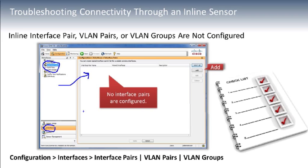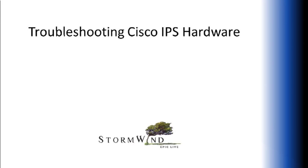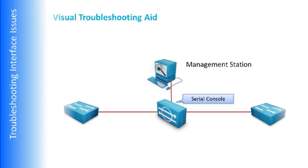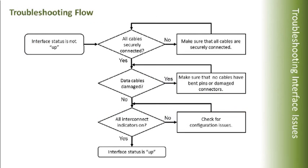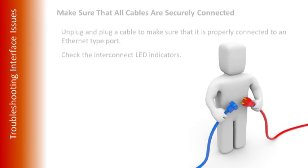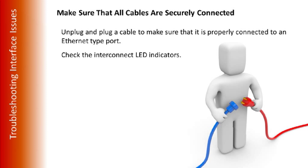During initial installation of the sensor, we may need to troubleshoot hardware issues — often these come down to interface hardware, such as the serial console. Make sure cables are properly seated and not damaged, interconnect indicators are illuminated, and interface statuses are up. You're probably used to unplugging a cable and re-plugging it, making sure it's properly connected, and checking the appropriate LED indicators.